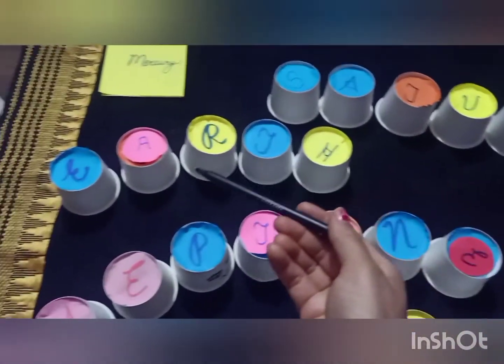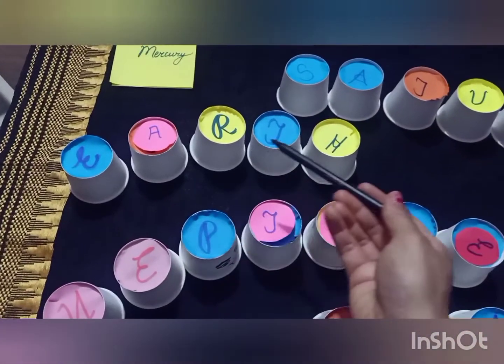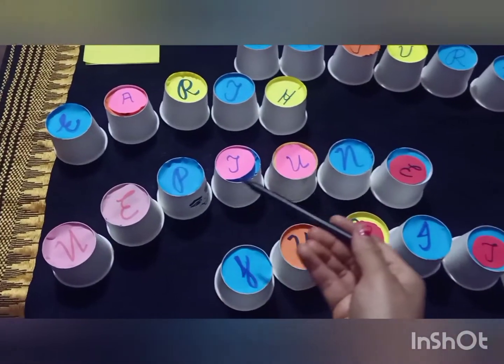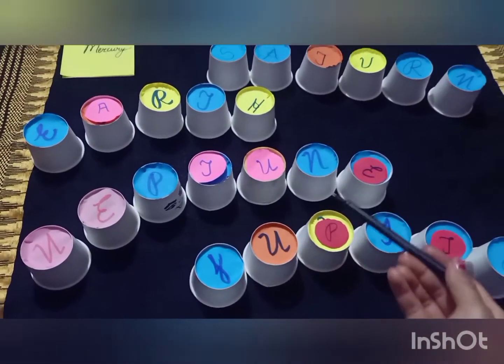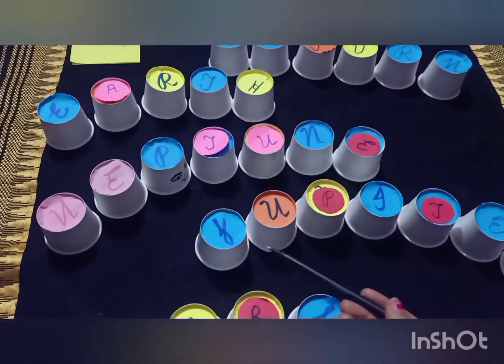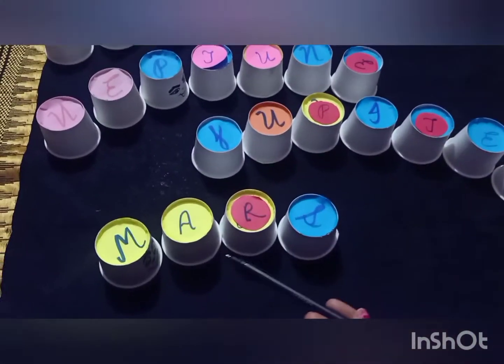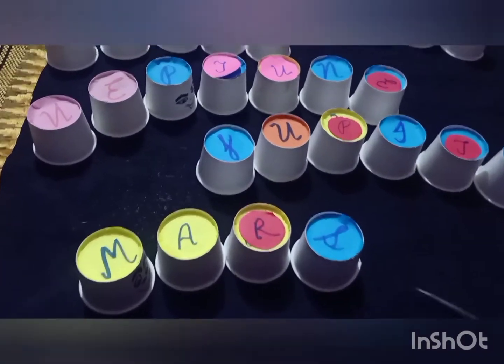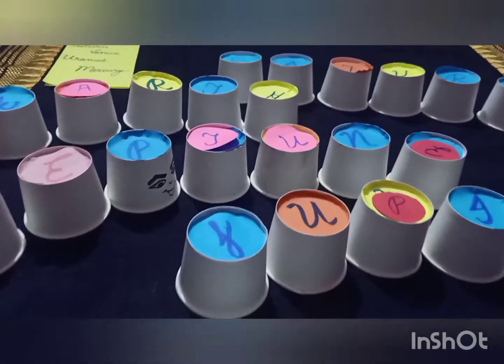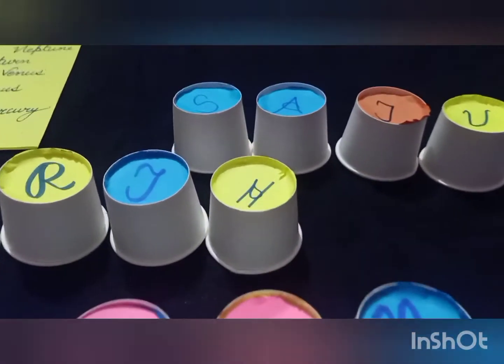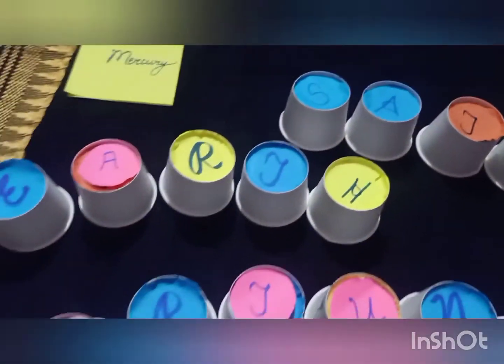The five planets are: Saturn, Earth, Neptune, Jupiter, and Mars. Now we will arrange them according to the correct alphabetical order.